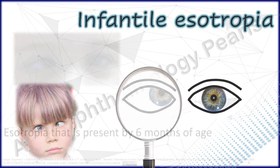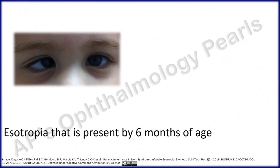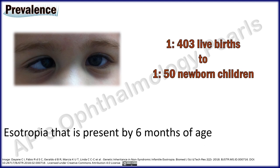Hello viewers, today we shall discuss infantile esotropia, which is esotropia that is present by six months of age. The prevalence is reported to range from 1 in 403 live births to as high as 1 in 50 of all newborn children.